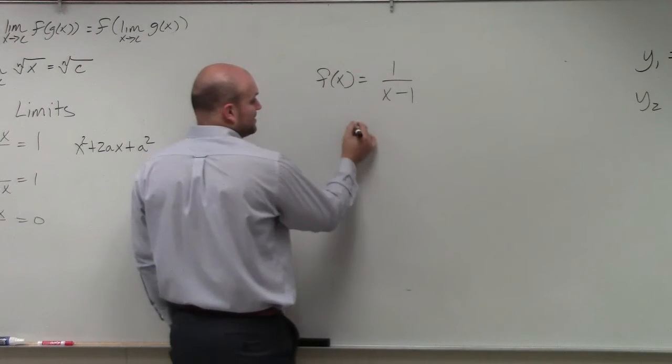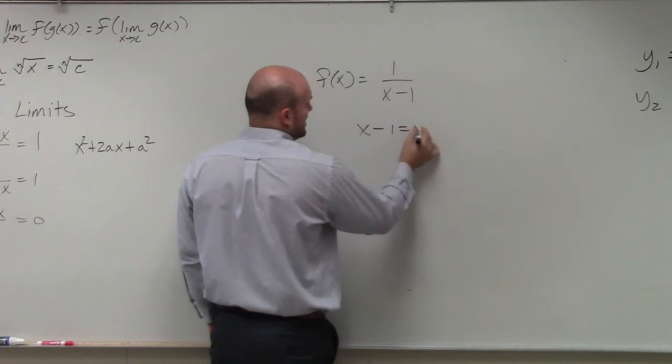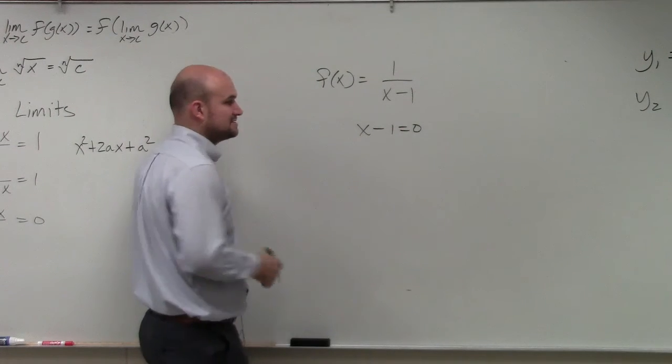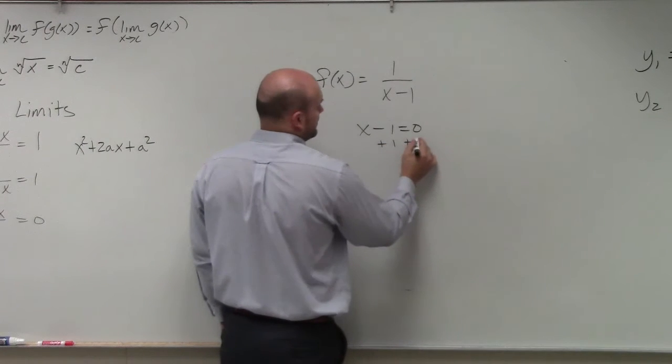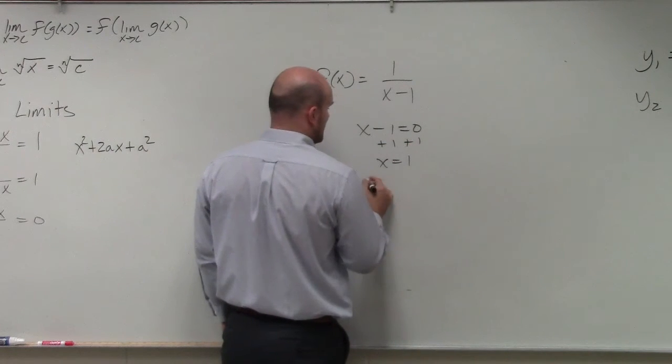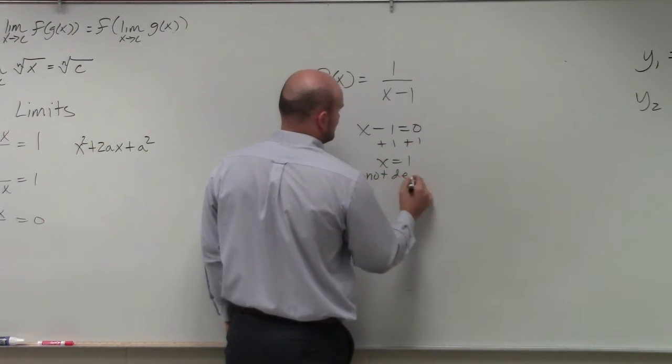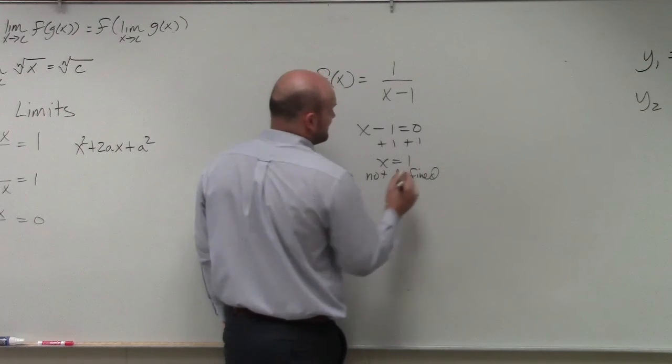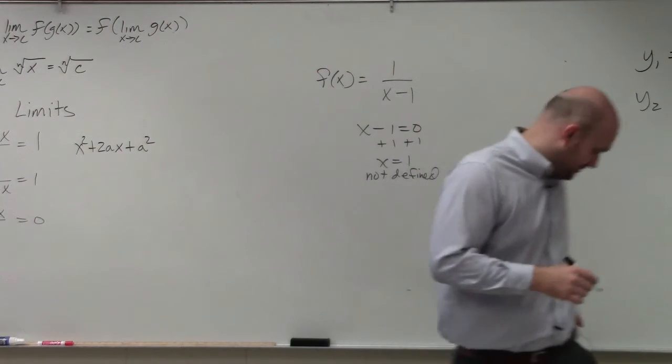Well, our discontinuity is going to be what values are not a part of our domain in this case. So we set our denominator equal to 0, and we add 1. So x equals 1 is not defined. Since it's not defined, we know that it's a discontinuity for the graph.